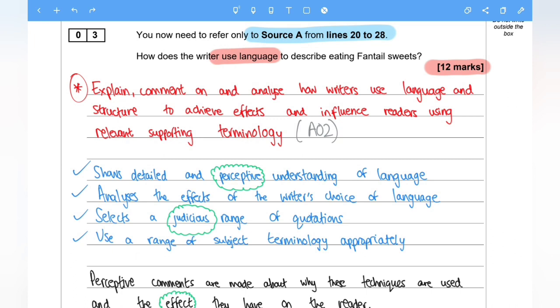So question 3 reads the following: You now need to refer only to source A from lines 20 to 28. How does the writer use language to describe eating fan-tailed sweets? And it's 12 marks.